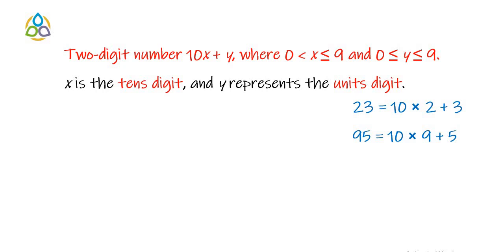We now find an inequality for the values of x and y. Clearly the x value cannot be equal to 0. In that case the given number will no longer be a two-digit number, but x can take any values from 1 to 9. As a result, the inequality for x is 0 less than x less than or equal to 9.